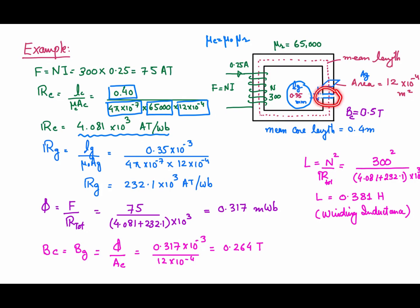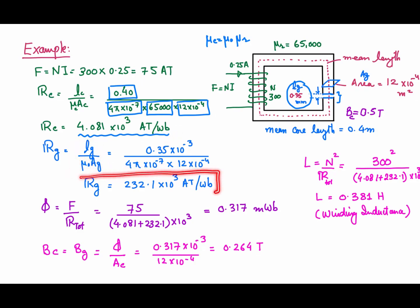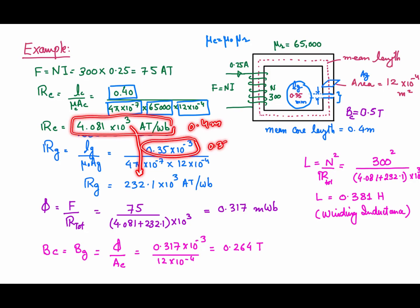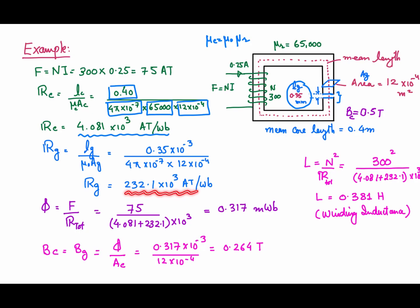For the air gap reluctance, the length is 0.35 mm. Using R_air = l_g/(μ₀ × A_g), with only μ₀ as the permeability, the air gap reluctance is very high. Although the core length (0.4 m) is much larger than the air gap (0.35 mm), the much lower permeability of air results in the air gap reluctance being much higher.